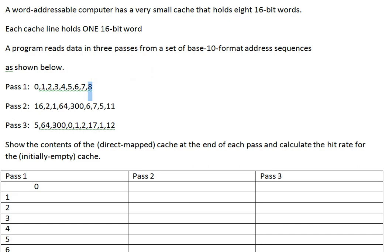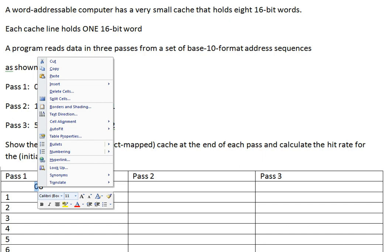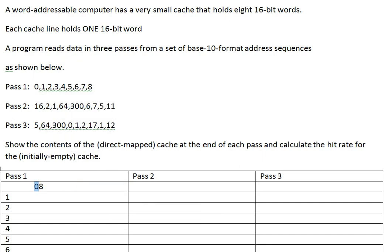But then we come up to this one — still in pass one. Block eight goes into line eight mod eight, which is zero. And word zero is gone. The cache contents at the end of pass one are: 8, 1, 2, 3, 4, 5, 6, 7. So there was one eviction, eight words accessed, and zero hits.